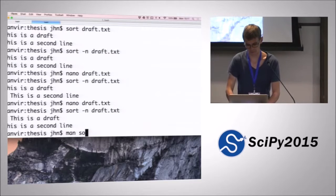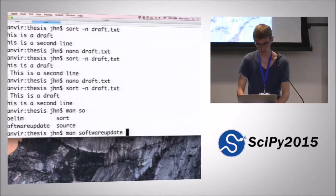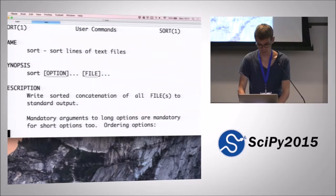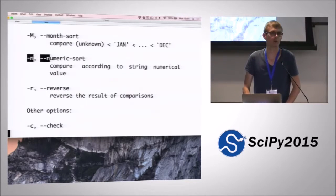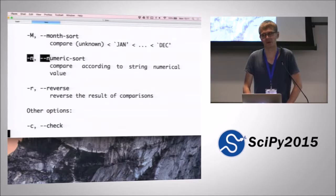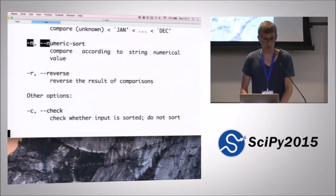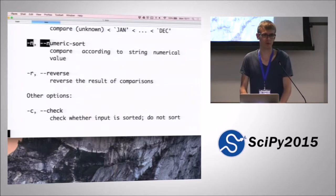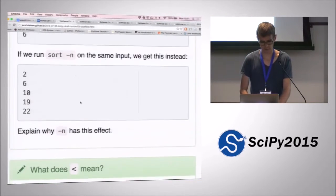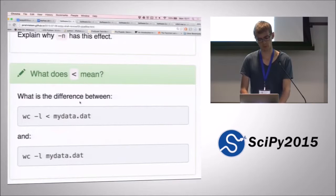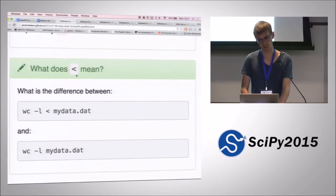The manual page is rather vague on that - it just says 'compare according to string's numerical value.' So you have to know how it converts to a numerical value when the input is not actually numerical. We can probably look that up.